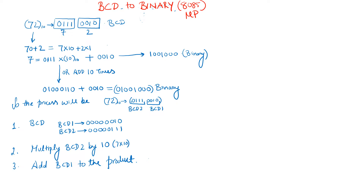What we do is multiply the binary code of 7 by 10, and then add the binary number 2 to that product, and we will get the desired binary output. Since the 8085 only supports addition, we add 7 ten times to simulate multiplication, and then add 2 to get the final binary output.